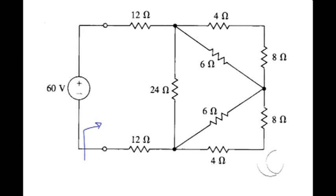In this problem, we're trying to find the equivalent resistance seen by the 60 volt source. Starting on the other end of the circuit over here,